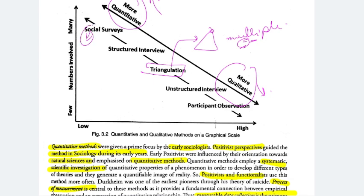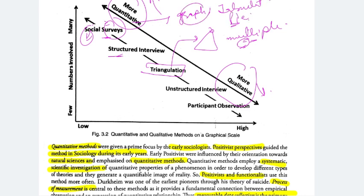Social surveys are more quantitative and so are structured interviews. Social surveys — no special expertise is needed to conduct them, and what you get is observable and measurable data. You can represent the survey results in a graph, tabulation method, or pie chart. So these methods are more quantitative.